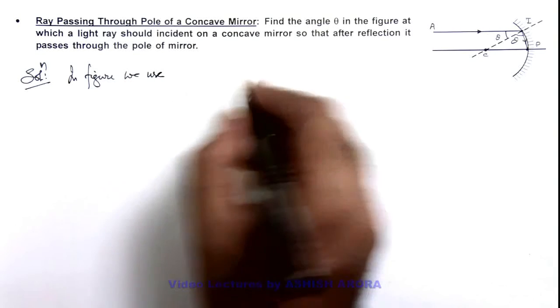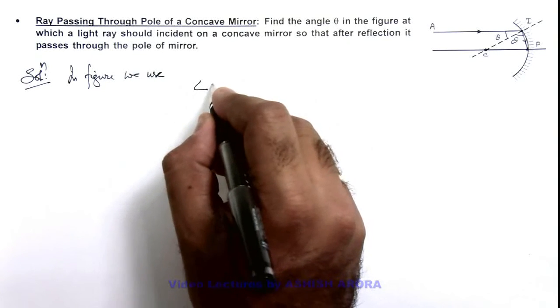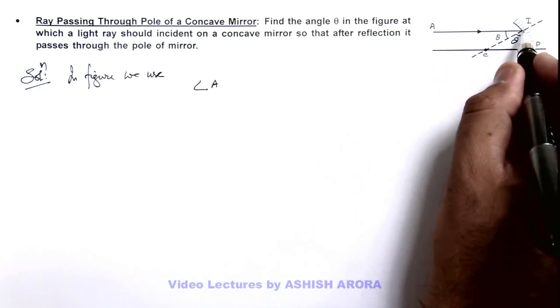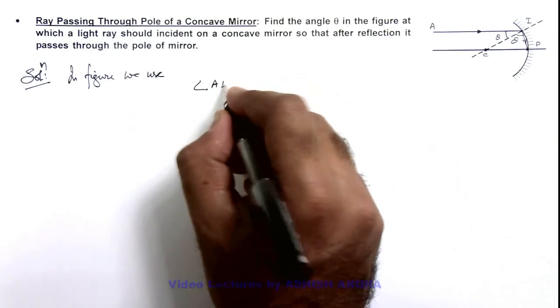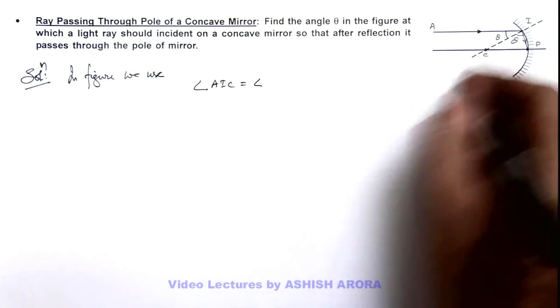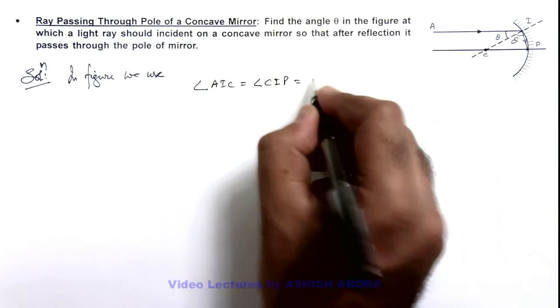We use by laws of reflection angle of incidence which is angle AIC must be equal to angle of reflection which is angle CIP, that is equal to theta.